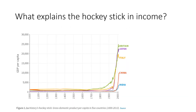The next task for us is to try to explain history's hockey stick in income. What I want you to consider is that capitalism can explain it — that capitalism explains why it is that incomes were flat for so long, and then with the advent of capitalism started growing for the first sustained period of human history. Thank you.